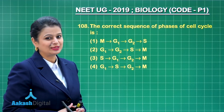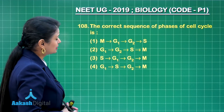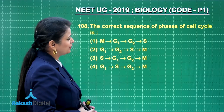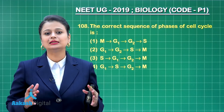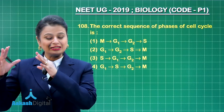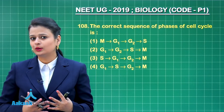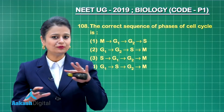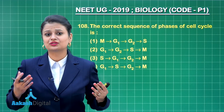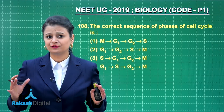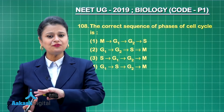Question 108 is a very simple question related to the cell cycle: what is the correct sequence of phases? The cell cycle basically consists of two phases — interphase and M phase. Interphase is a non-dividing phase where no division activity occurs, but all preparation required for division takes place.